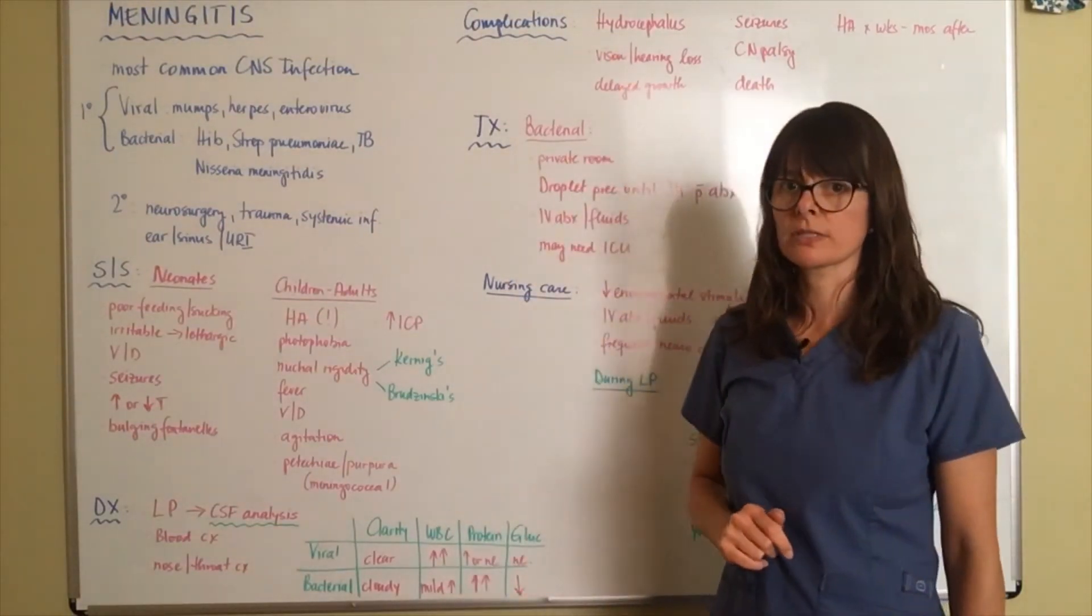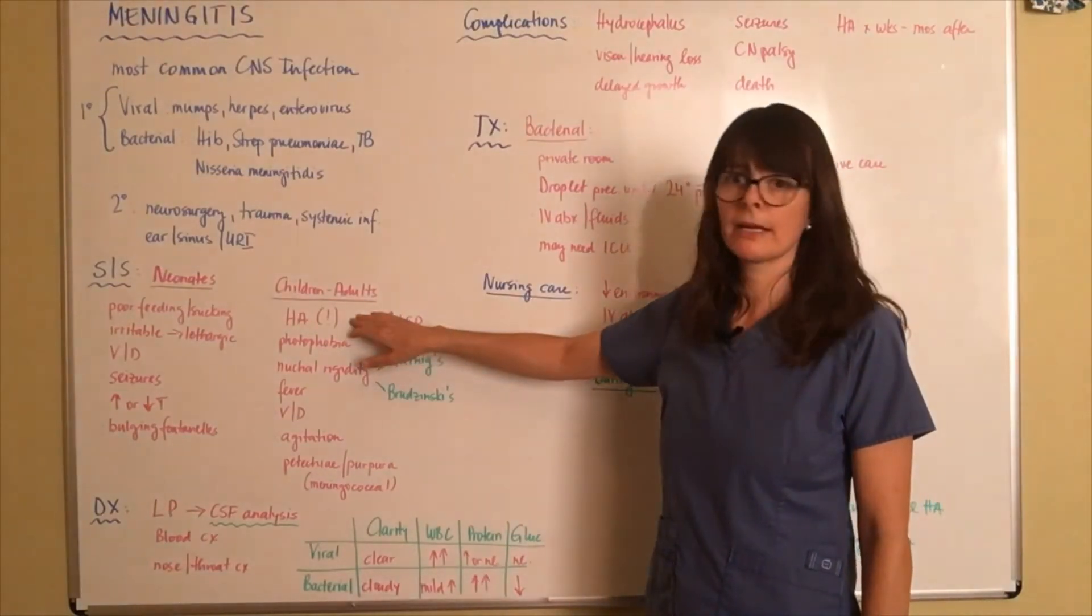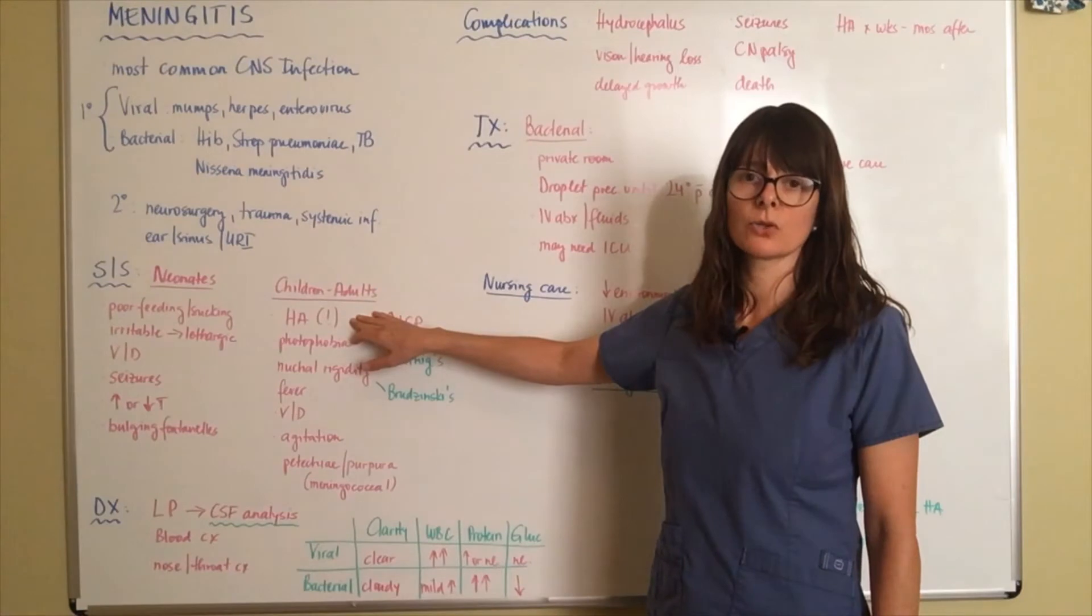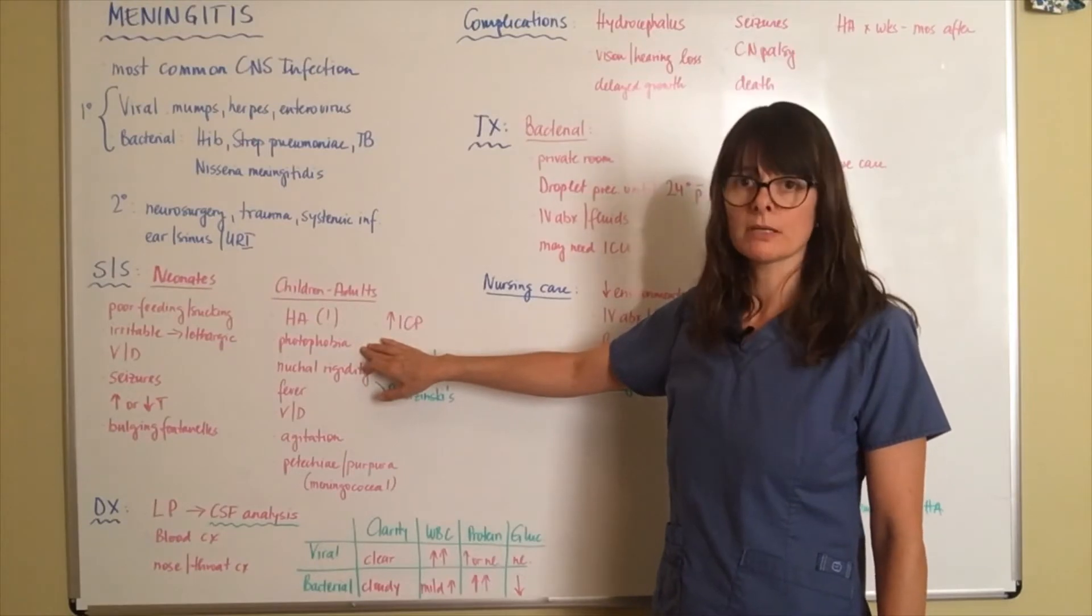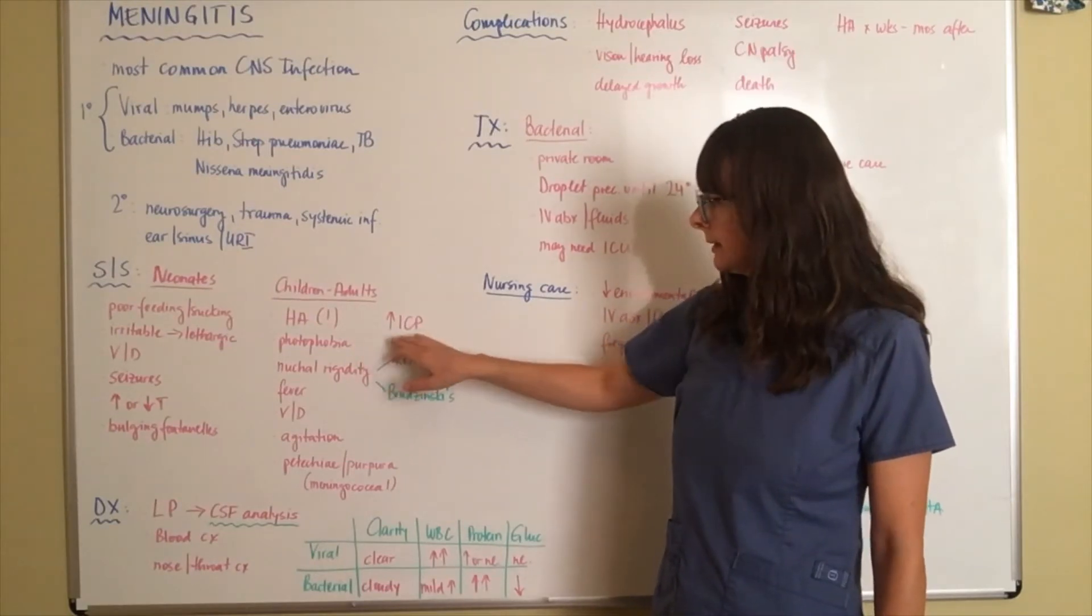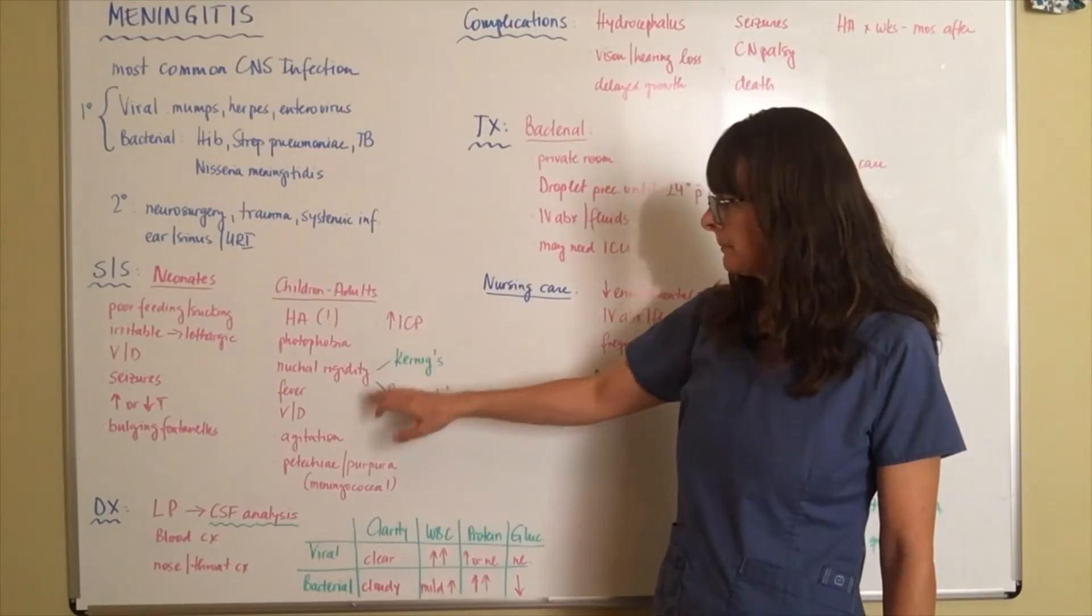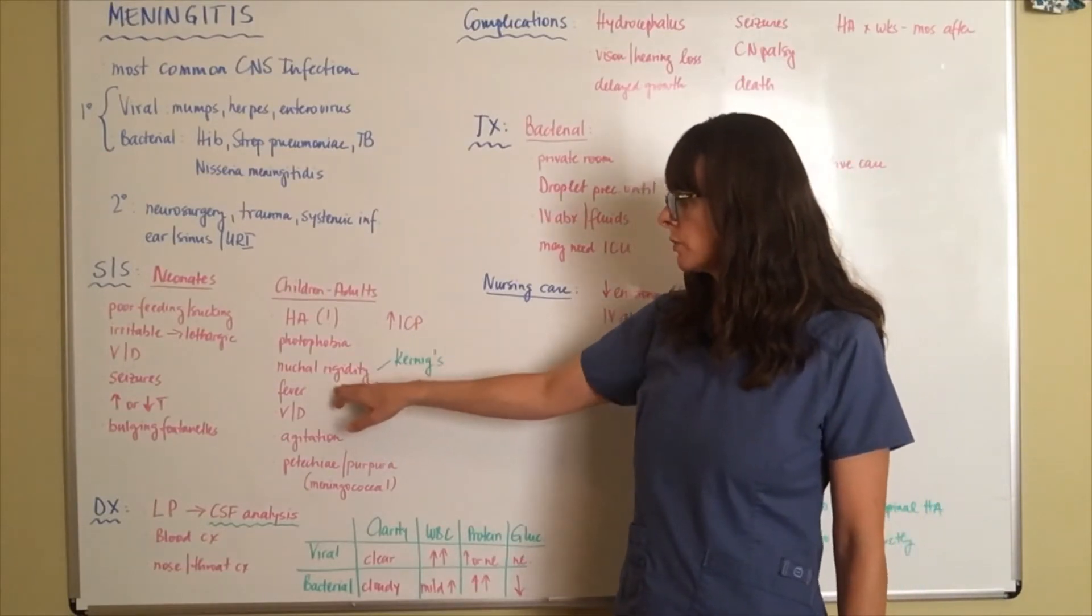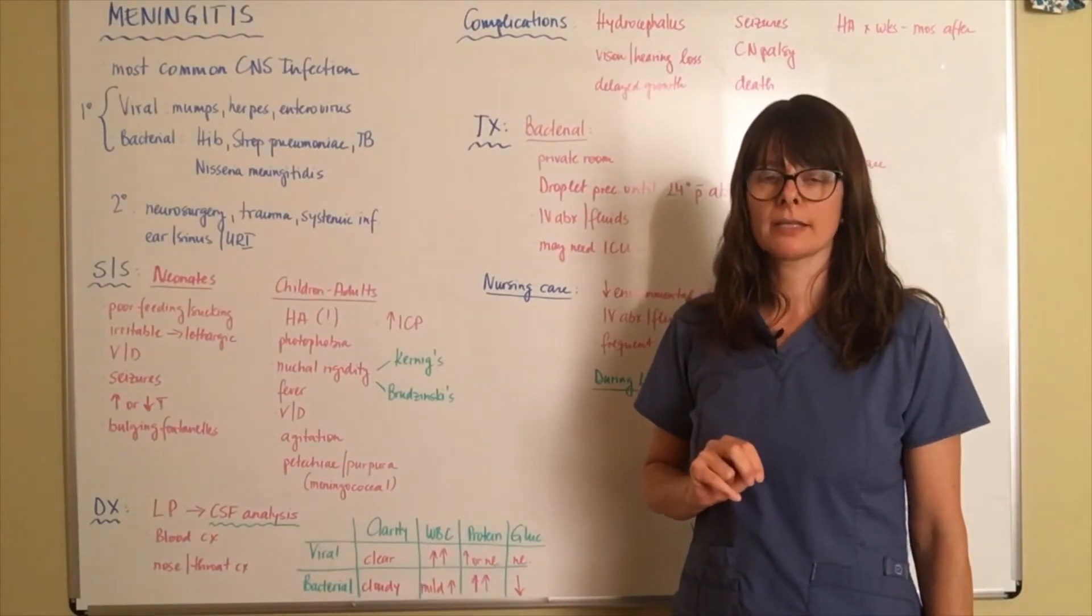In children or adults they might be complaining of a headache and that is usually a pretty significant severity in the headache. They might have photophobia, so sensitivity to light. They might also have increased intracranial pressure and then they might have nuchal rigidity which basically means neck stiffness.